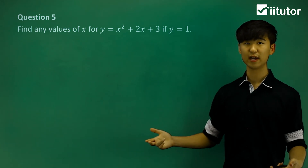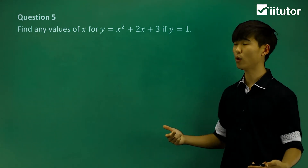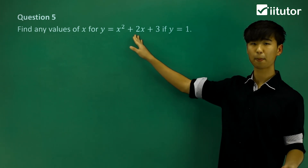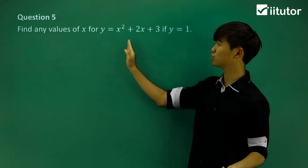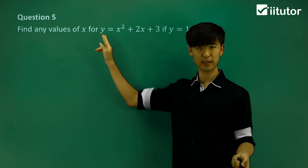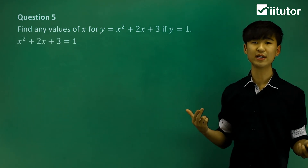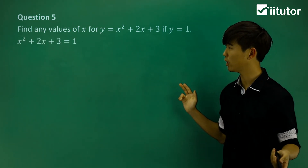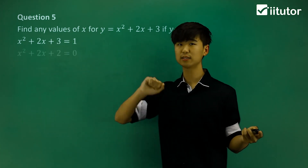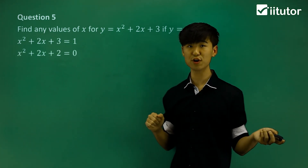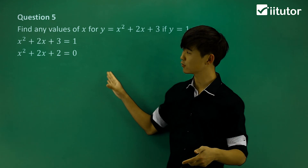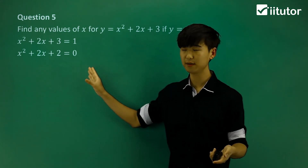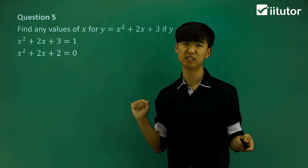Question 5. Again, we're going to find x. y = 1 and this is our quadratic. Let's put y = 1, so we have x² + 2x + 3 = 1. Now let's move the 1 to the other side to make it all equal to 0, and let's see if we can factorize it. If you try, we'll see that we can't factorize this nice and easy.